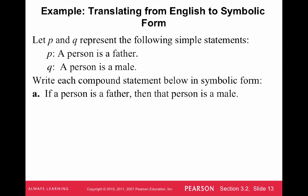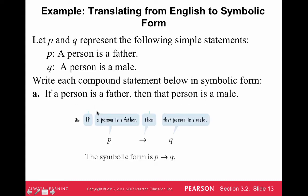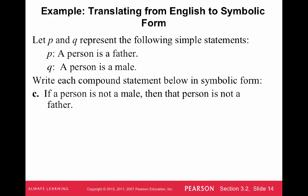Translating from English to symbolic form with if-then statements: let P be 'a person is a father' and Q be 'a person is a male.' 'If a person is a father, then that person is a male' is P → Q. The next one says 'if a person is not a male, then that person is not a father' — we start with the negation of Q, giving us ¬Q → ¬P.